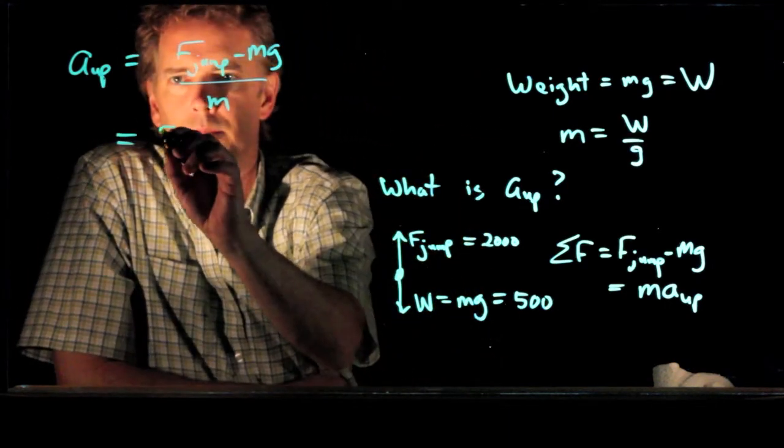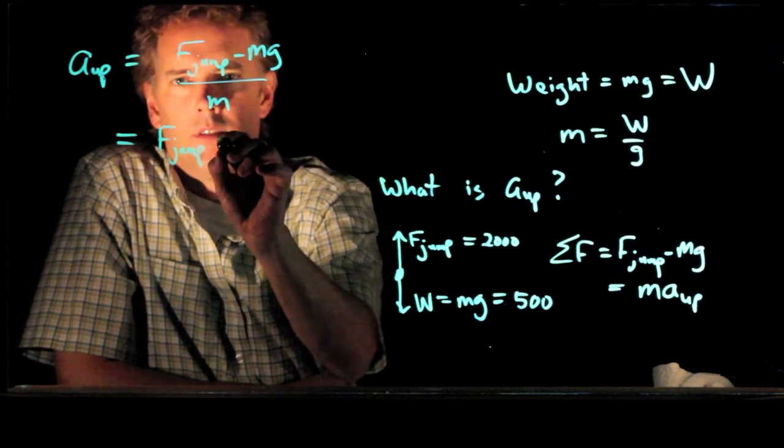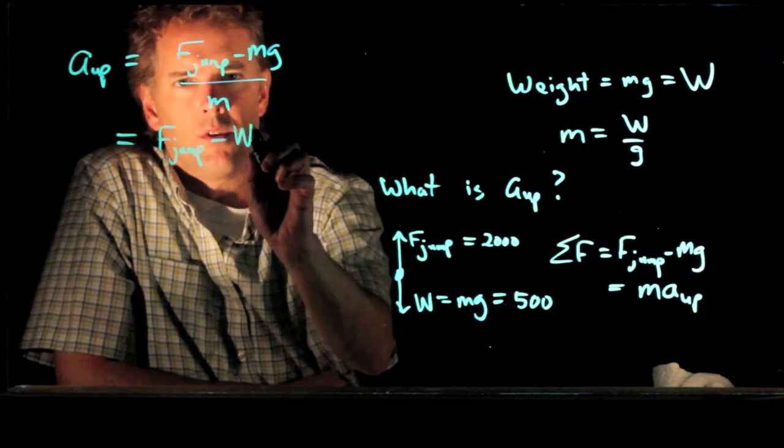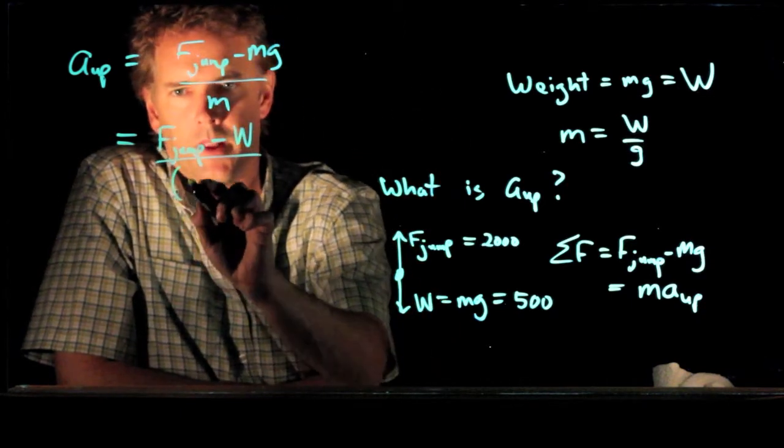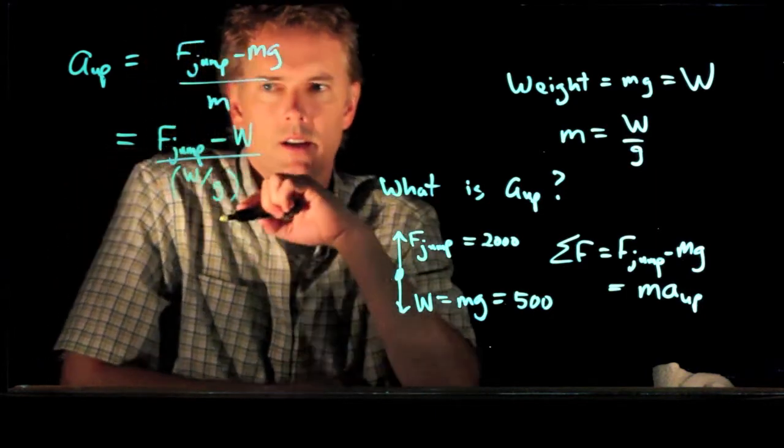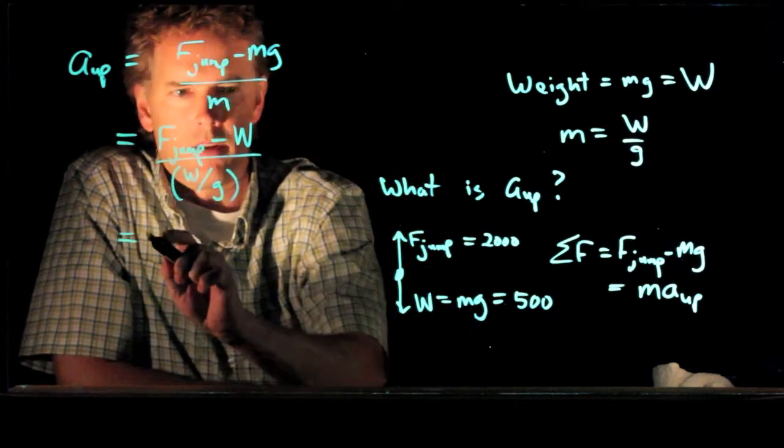F jump, we are given that from the graph. mg is, of course, just their weight W. m is apparently their weight divided by g. And now we can plug in all those numbers.